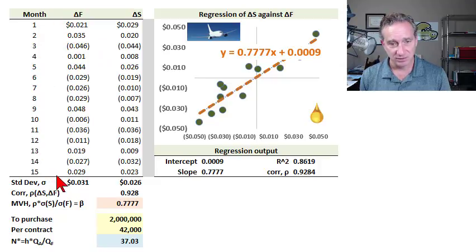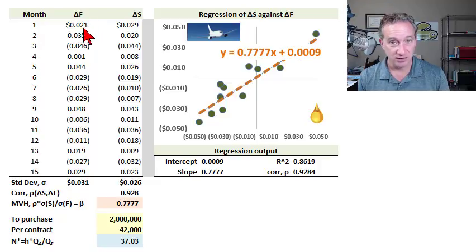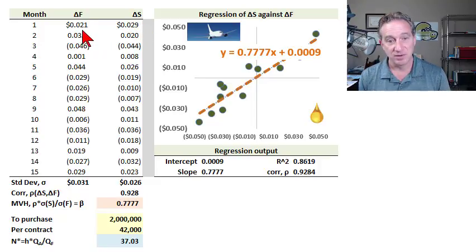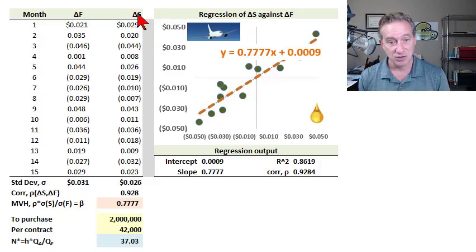So 15 months here of dollar price changes: in the first column, delta F — that is the change in the futures price — in this case the monthly change in the futures price of the heating oil being used to hedge. And in the second column, delta S — that's delta spot — the monthly change in the price of jet fuel. In the first month, the heating oil futures price increased a little over $0.02 per gallon, and the jet fuel price increased almost $0.03.